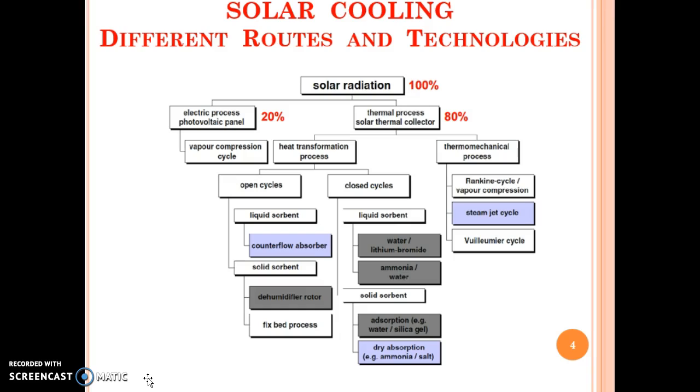Solar cooling: what are the different routes and technologies? One way to produce cooling is to use solar photovoltaic collectors as it is shown here, and the other way is to convert solar radiation into thermal energy. If you convert solar energy into electrical energy you can run a vapor compression cycle with the help of that and produce cooling. If you convert it into heat, then there are various methods to produce cooling.